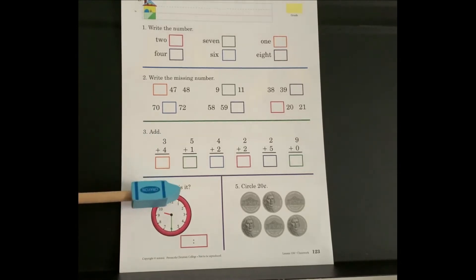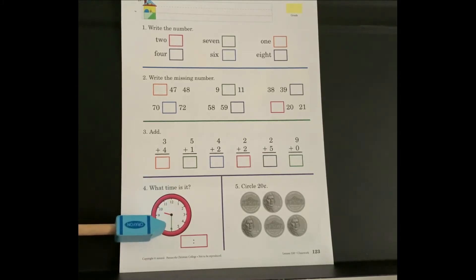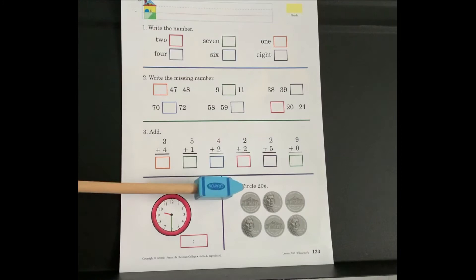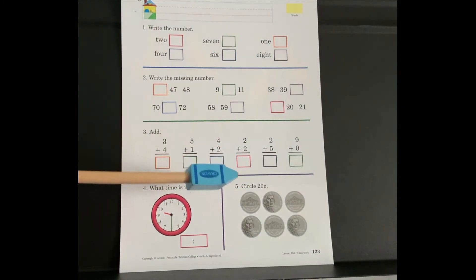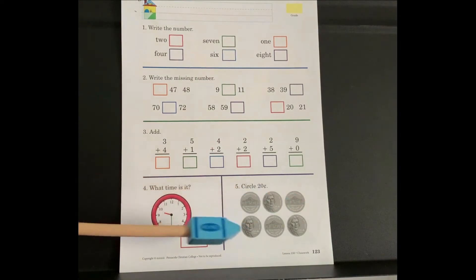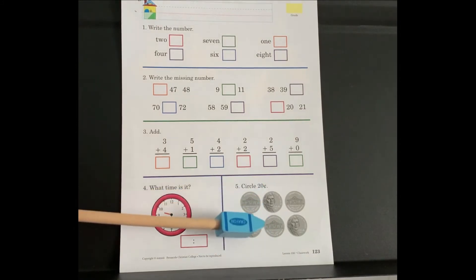Number four, what time is it? Look at the clock. Remember, the short hand is the hour hand and the long hand is the minute hand. Look at the clock and write the time in the box provided. Number five, circle 20 cents. Look at the coin and observe it — what coin is that? When you have determined the coin, you are going to circle 20 cents.